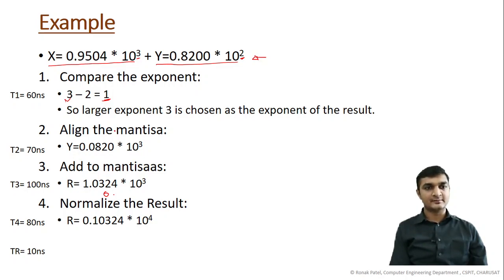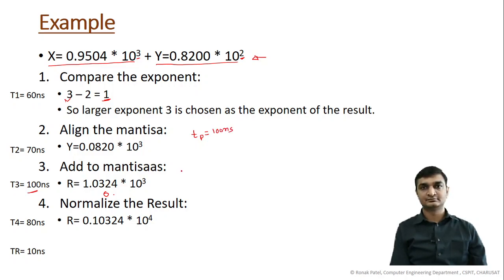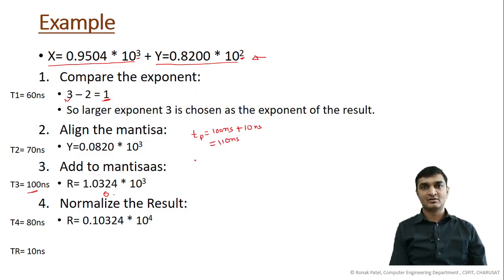Each operation works on a clock, so we need to set the clock time tp. The clock time is determined by taking the largest segment time. Among the four segments, 100 nanoseconds is the largest value. Adding the register delay of 10 nanoseconds, the clock period tp is 110 nanoseconds.